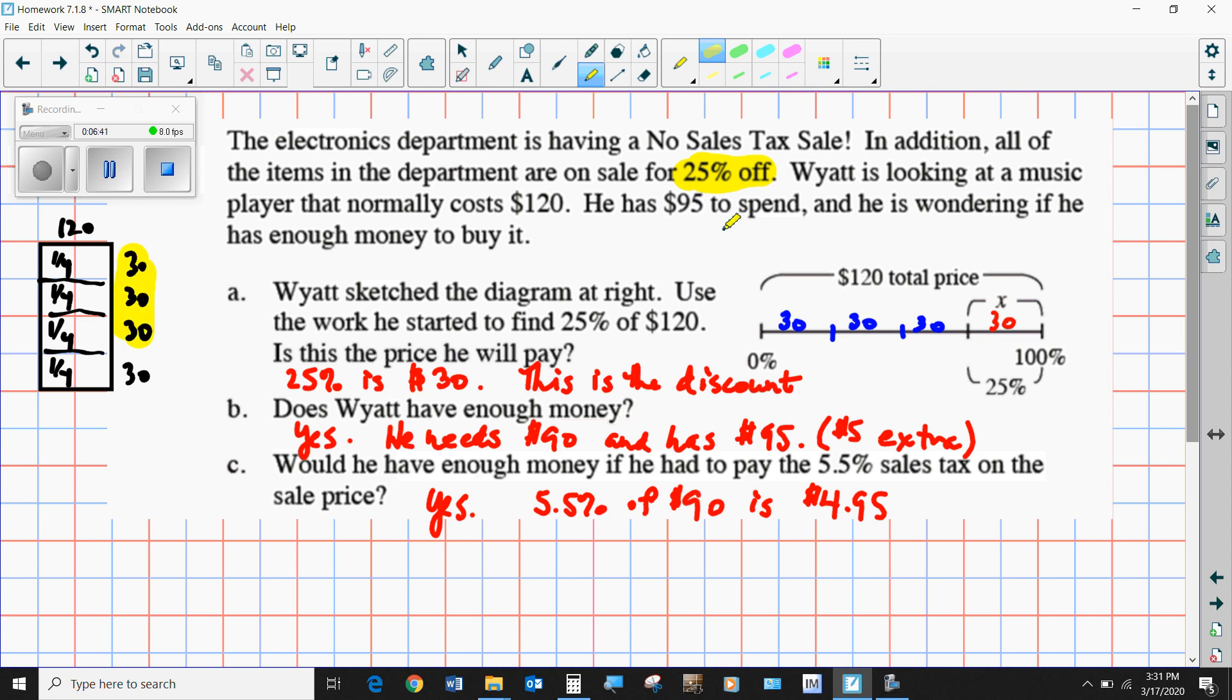So he has $95. That means he's got enough money. Now, would he still have enough money if he paid 5.5% sales tax? Well, if you find out what 5.5% of 90 is, then you'll see that it's $4.95. He just barely has enough money. He would still have a nickel left over after everything was done, because he'd pay $90 for the music player plus an additional $4.95 for the tax, to make that $94.95.